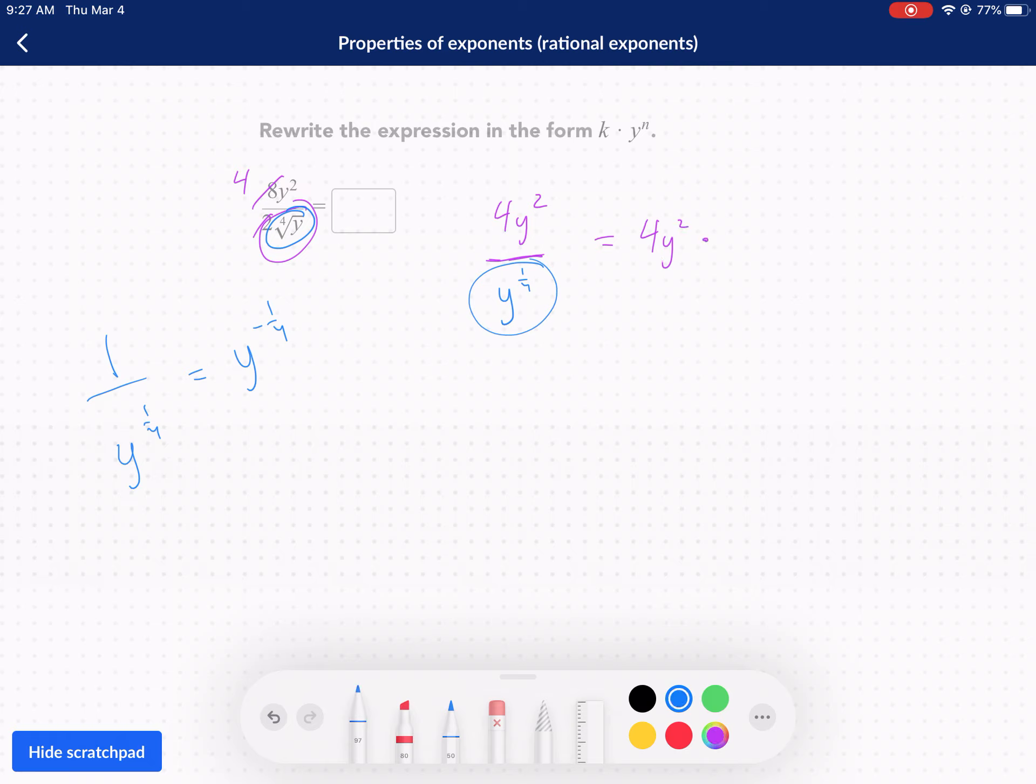Now I don't like it in the bottom of a fraction though. So again, y to the one-fourth, if it's in the bottom, that's equal to y to the negative one-fourth. So I'm going to change this to four y squared times y to the negative one-fourth power. Now I have like bases, y and y. So I'm going to add exponents. Two plus a negative one-fourth. We're going to have to get a little creative because two can be rewritten as eight over four, and then we're subtracting one over four. That's going to give us seven over four. Four times y to the seven over fourth power.